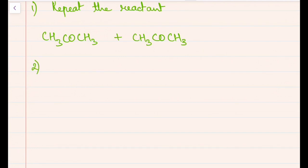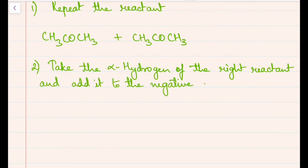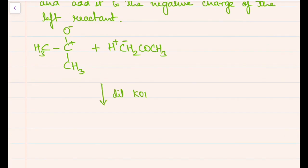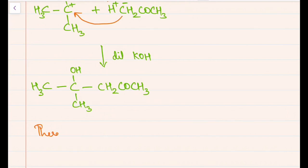In the next step, we take the alpha hydrogen from the right reactant and attach it to the negative charge on the left reactant. In the presence of dilute KOH, we get our beta hydroxy ketone. As mentioned, you will either get a beta hydroxy aldehyde or a beta hydroxy ketone — and this time we got a beta hydroxy ketone.